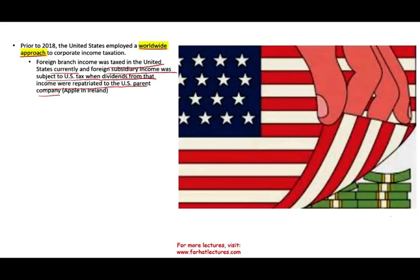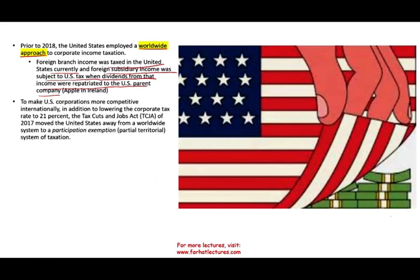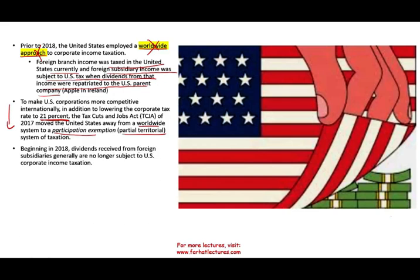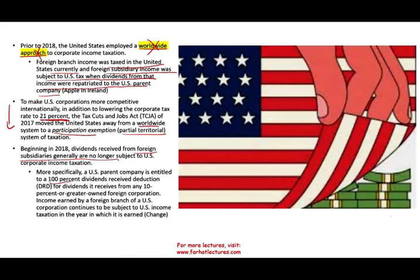This worldwide approach was a disadvantage for US companies — money was sitting overseas and not returning home. The government, under President Trump, acted to make the US more competitive. First, they lowered the corporate tax rate to 21%. Then they moved from the worldwide approach to something called a partial territorial system of taxation — more of a participation exemption hybrid. Starting in 2018, dividends received from foreign subsidiaries are generally no longer subject to US corporate income tax.